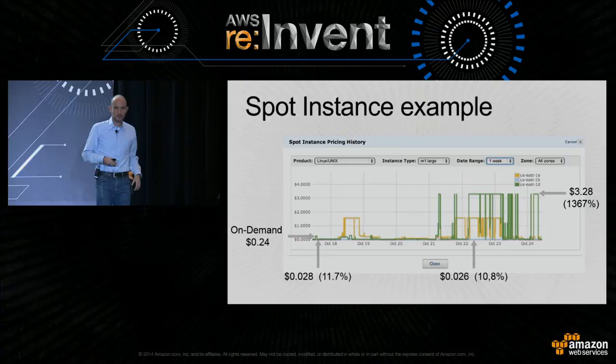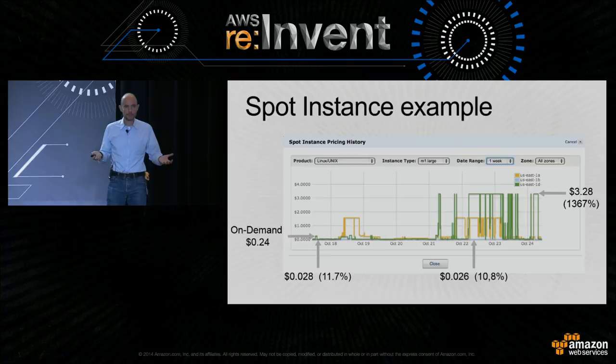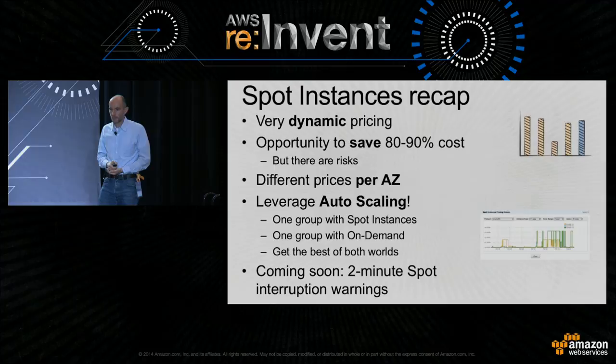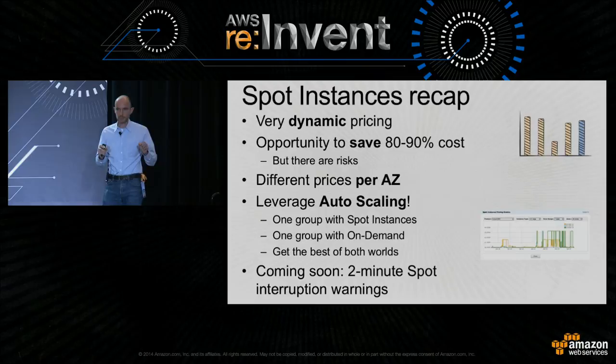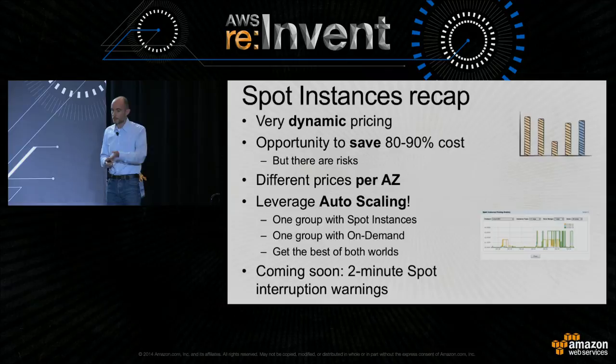Sometimes supply drops and demand becomes high, so the price can even exceed on-demand. To mitigate this, figure out the right maximum price you're willing to set. You can use auto-scaling to automatically turn on instances in a different availability zone if one becomes too expensive. It's a very dynamic pricing model, but if you invest a little more brain power here, you can save as much as 80 to 90% in cost. There are some risks, but you need to prepare for risks anyway, and it becomes second nature to accept spot instances as if they were normal ones.